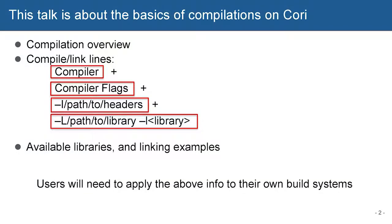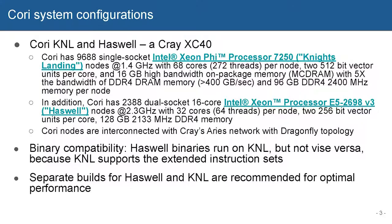This is the Cori system configuration. It is a Cray XC40. KNL has more but weaker cores in comparison to Haswell processors, but they are both Intel processors. In the context of compilation, one thing you need to remember is KNL supports more extended instruction sets. If you build a binary optimized for Haswell architecture, it runs on KNL, but not vice versa.